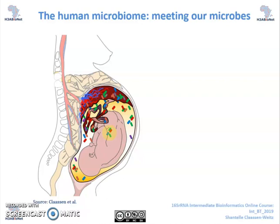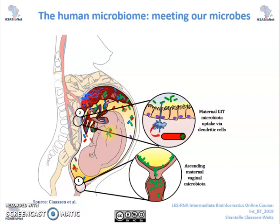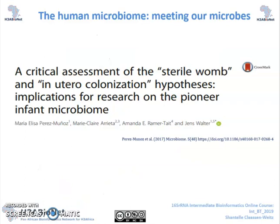To better understand how in-utero colonisation may occur, a number of hypotheses have been generated. One suggests that maternal vaginal microbiota may ascend into amniotic fluid. Another hypothesis suggests that maternal gut microbiota are taken up by dendritic cells and then transferred transplacentally to the fetus. But despite the contribution that 16S sequencing technology has made to better understand how we acquire our microbes, this technique, as any other, is not without its own limitations.